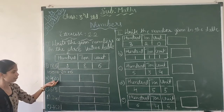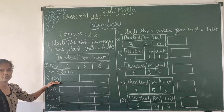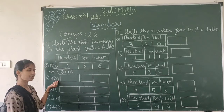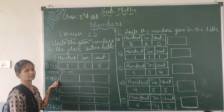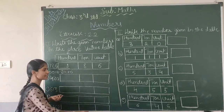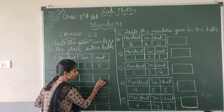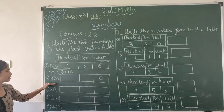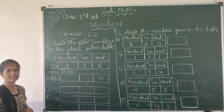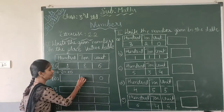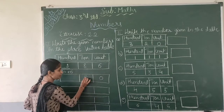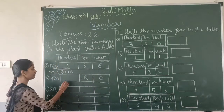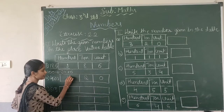Second number: 420. Here 0 is in the units place. 2 is in which place? 2 is in the 10's place. And 4 is in the 100's place.